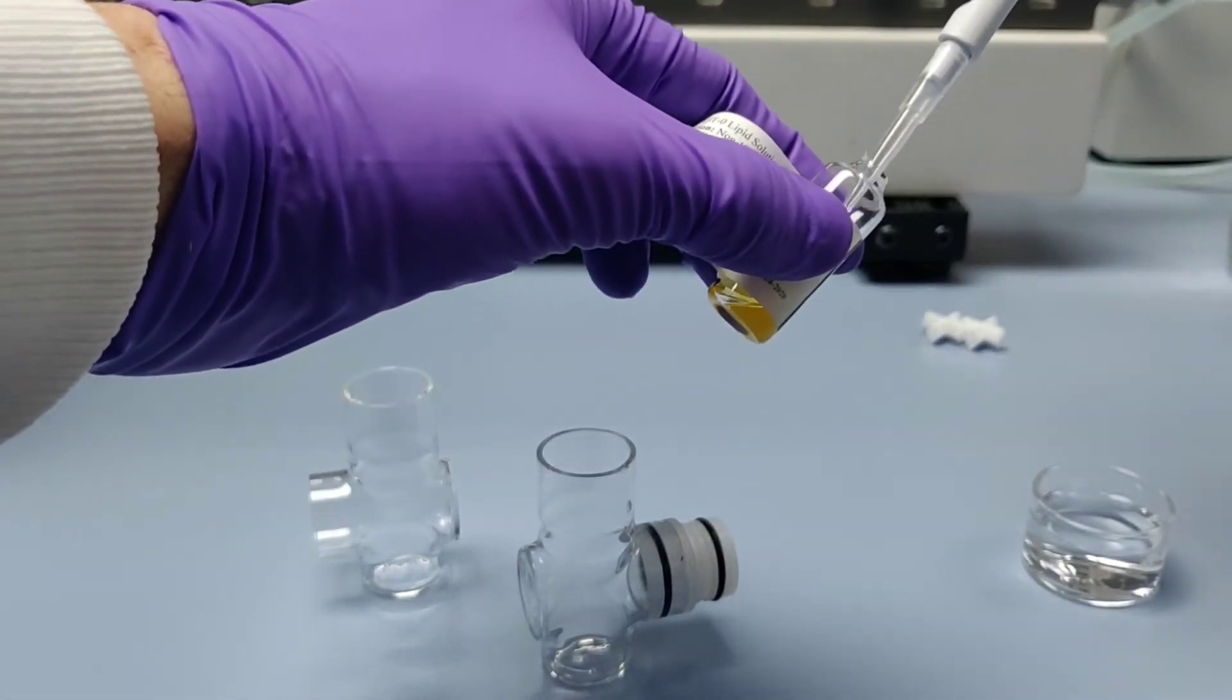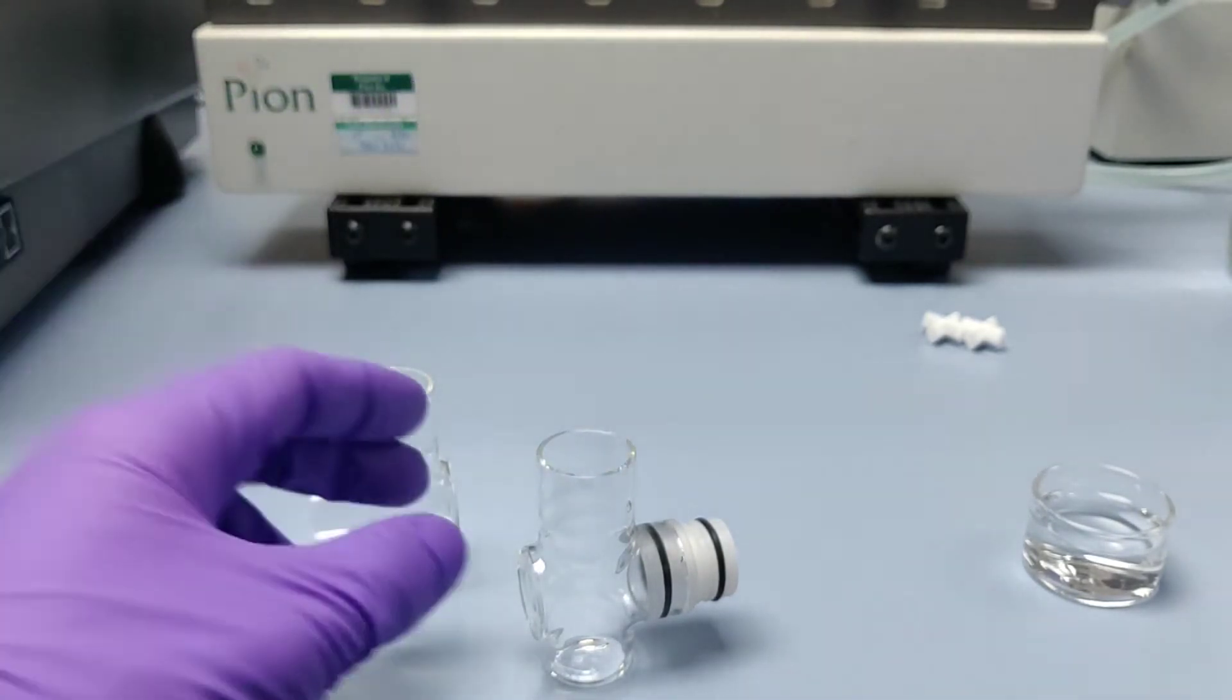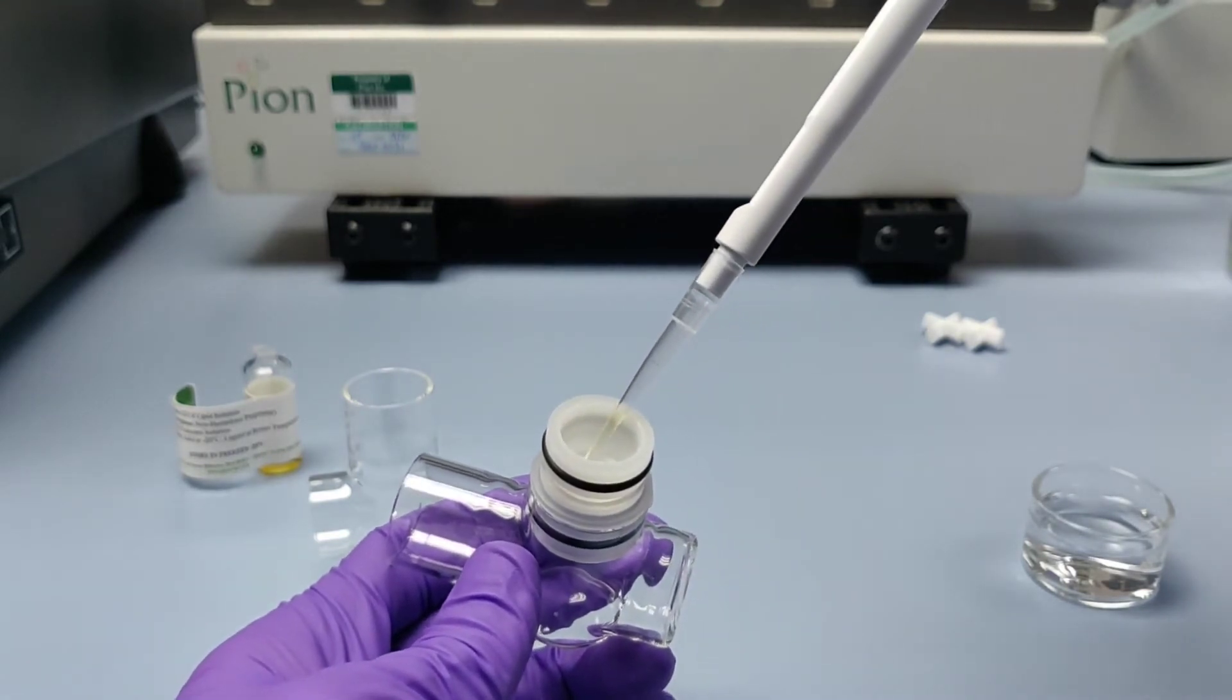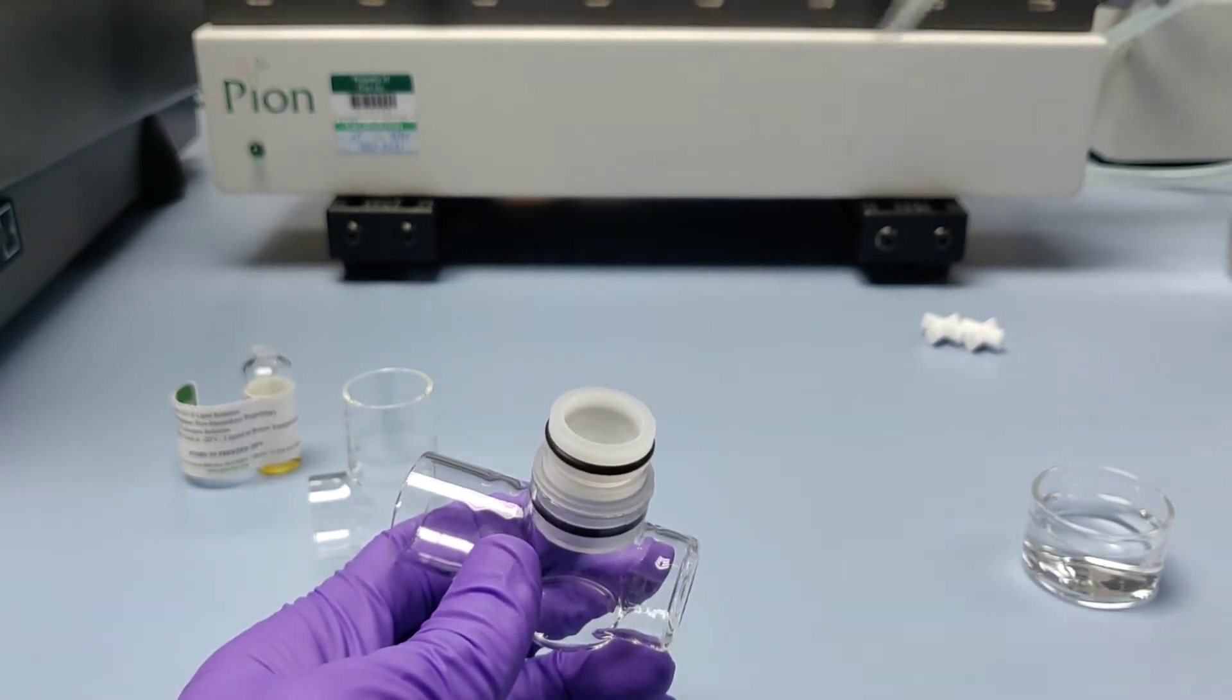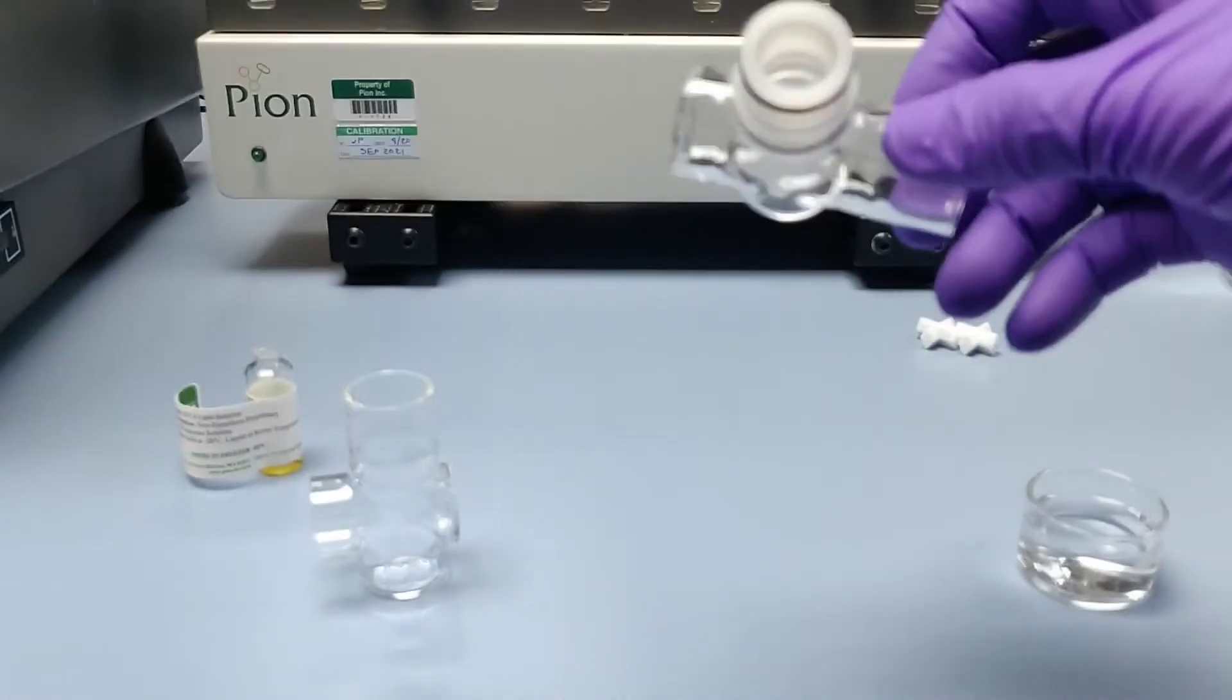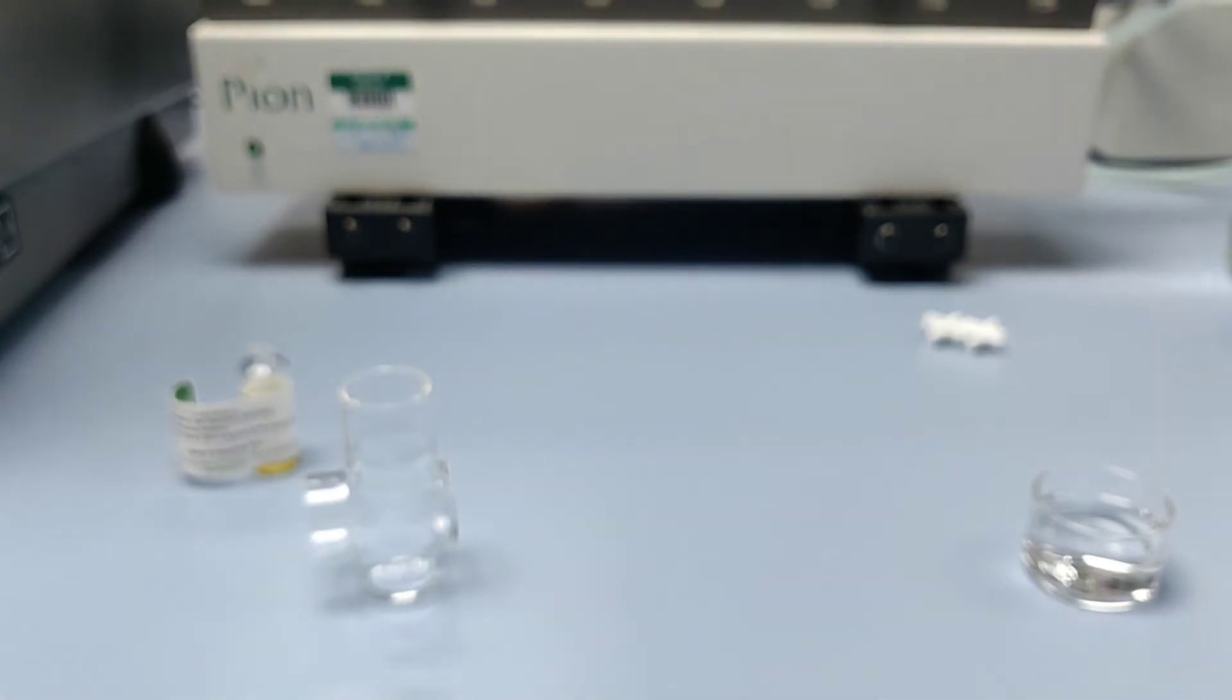At this point, we can paint the membrane support with the GIT lipid solution. 25 microliters of GIT lipid are pipetted onto the membrane and distributed to ensure complete coverage. Once fully coated, the membrane will have turned completely translucent, and from this point onwards, this is a time-sensitive procedure.